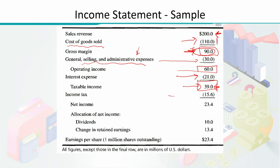On the taxable income, tax is deducted at the rate specified by the government. We assumed that to be 15.6 million dollars. Subtracting that gives us 23.4 million dollars — this is the net income generated for the imaginary company XYZ for the year 2001.